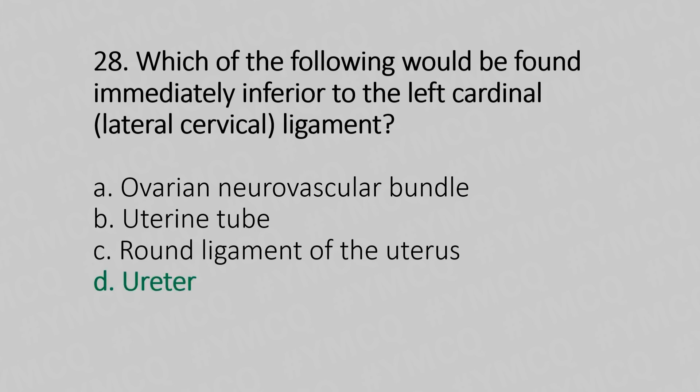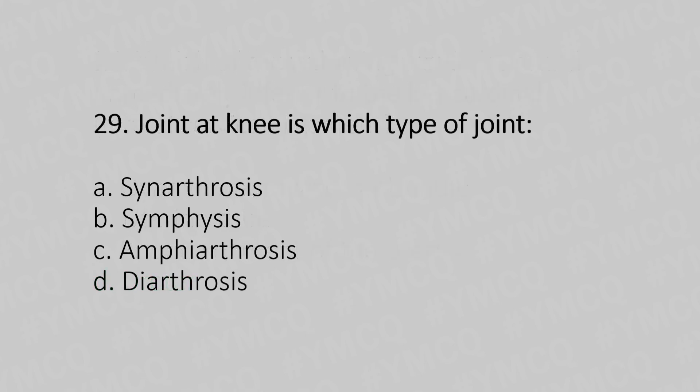Now let's move to question number 29. The joint at the knee is which type of joint? Option A: synarthrosis. Option B: symphysis. Option C: amphiarthrosis. Option D: diarthrosis. And the answer is Option D — diarthrosis.